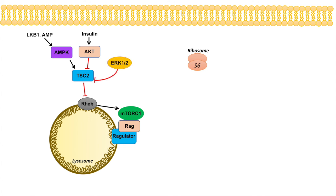There are also a couple of other regulators that many people don't think about. One is ERK — which we discussed in the RAS-RAF-MEK-ERK pathway video — and ERK is regulated by RAS. ERK actually inhibits TSC2, which means it activates mTORC1. Another regulator is P53, which actually activates TSC2. P53 is traditionally activated by cellular stresses such as DNA damage, so P53 leads to inhibition of mTORC1.